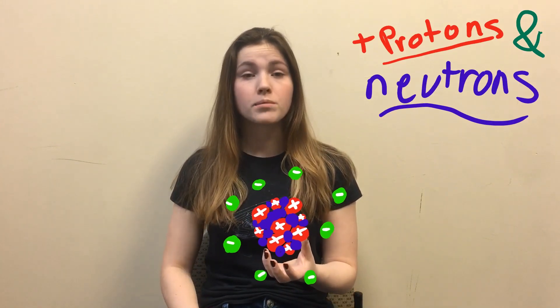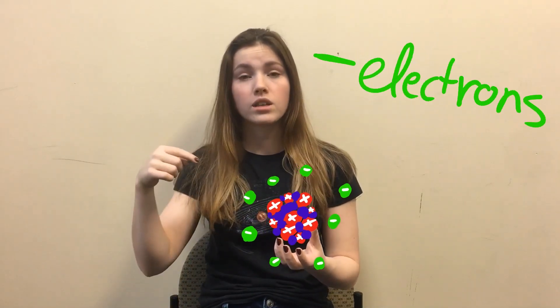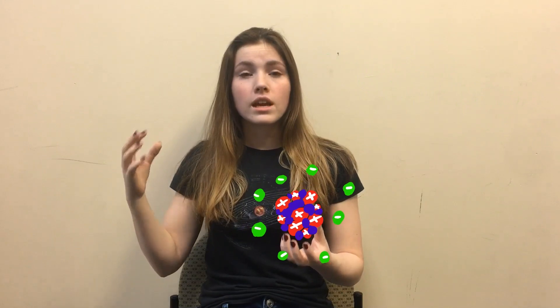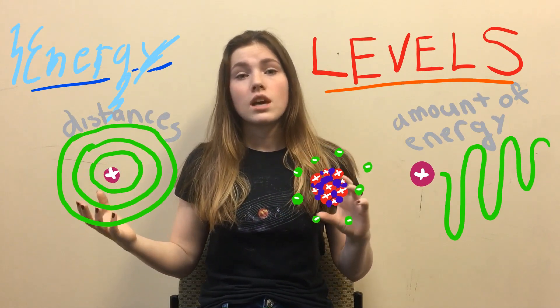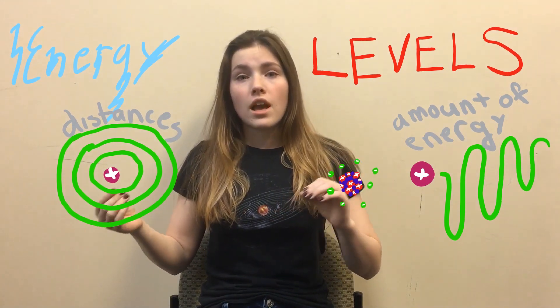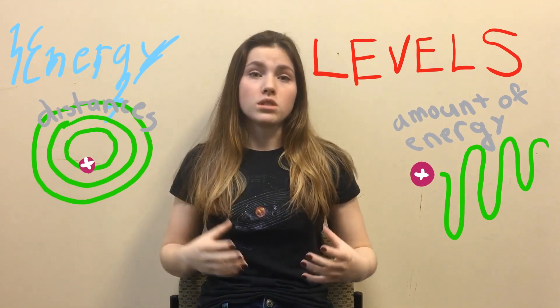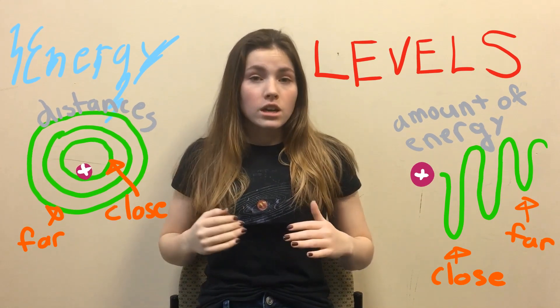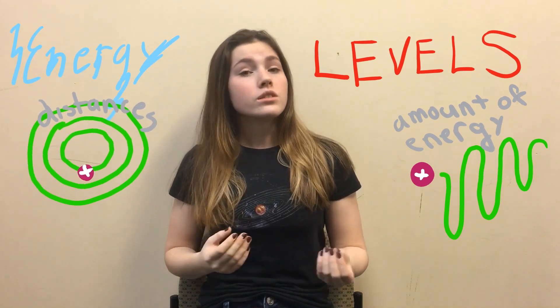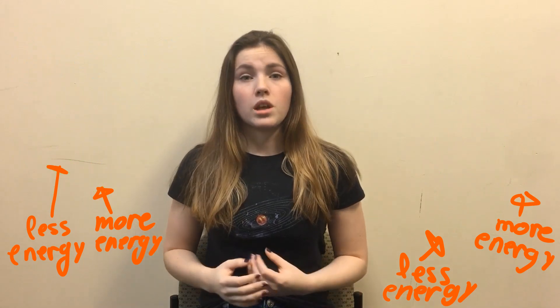Now, electrons work similarly. In an atom, you have a positive nucleus made up of protons and neutrons, and you have negative electrons surrounding it. The negative electrons are categorized into energy levels — groups of electrons with different amounts of energy and different distances from the nucleus. Lower energy levels have less energy and are closest to the nucleus. Electrons want to be in low energy levels.